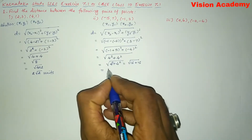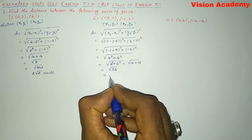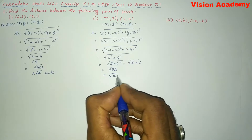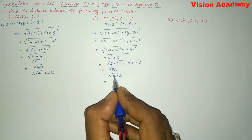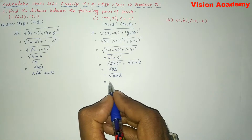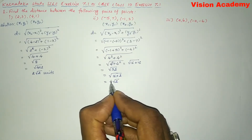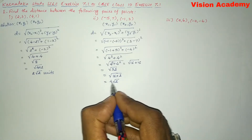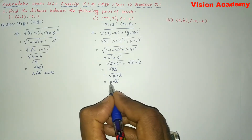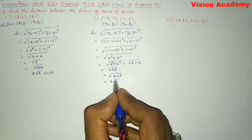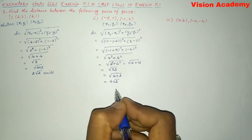So 4² plus 4² is 16 plus 16, which is square root of 32. This can be written as square root of 16 times 2. Since 16 is a perfect square, it comes out of the square root as 4, leaving square root of 2 inside. So the answer is 4 square root of 2 units.